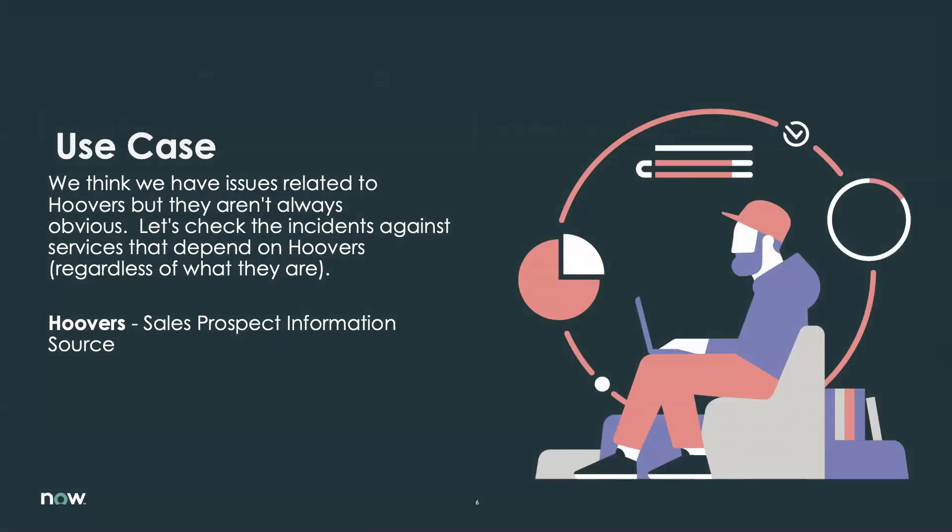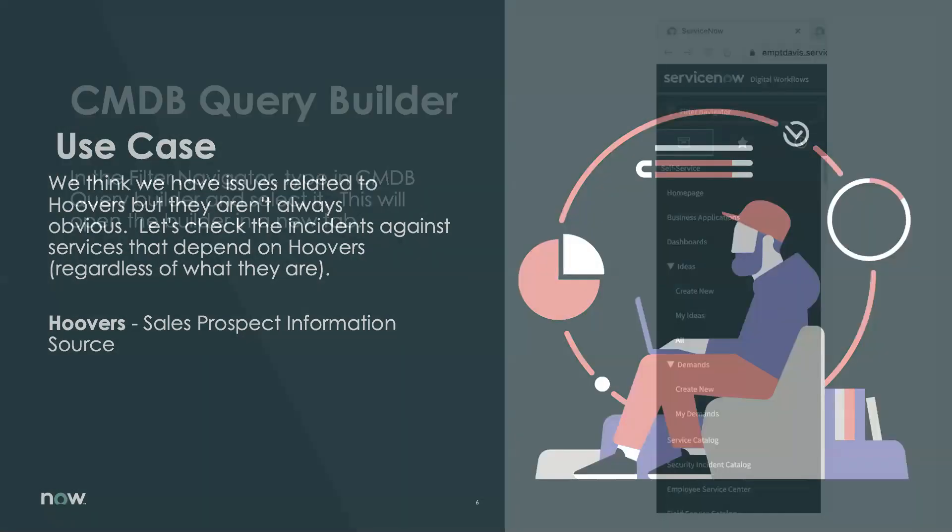Before we get started, let's establish a use case that will help us as we go forward. We have issues related to Hoover's, but they aren't always obvious. We want to check incidents against services that depend on Hoover's, regardless of what they are. Hoover's is just a sales prospect information source — some may be familiar with it, some may not.